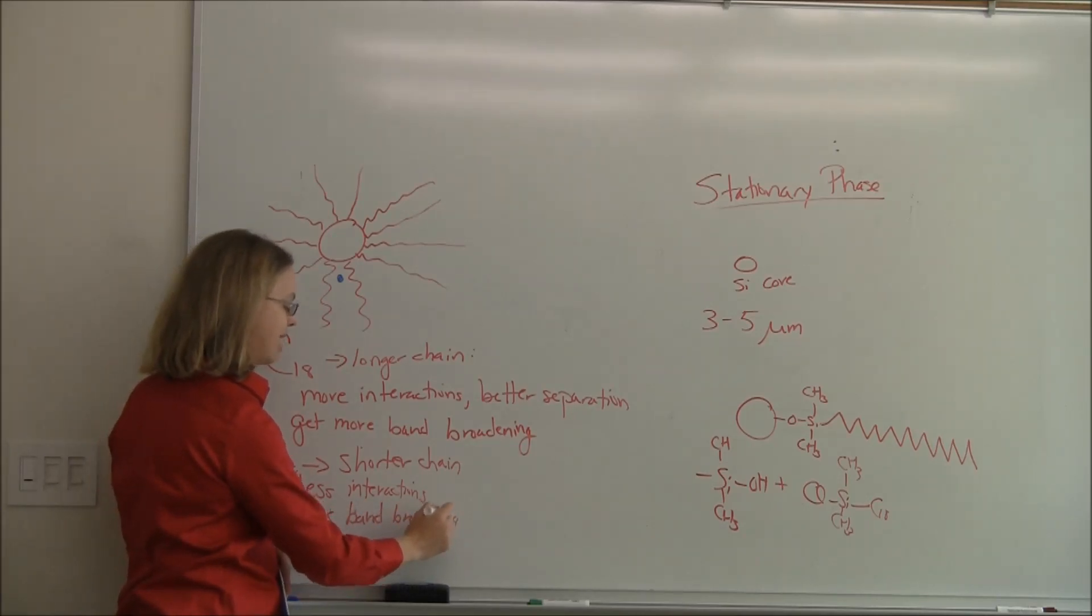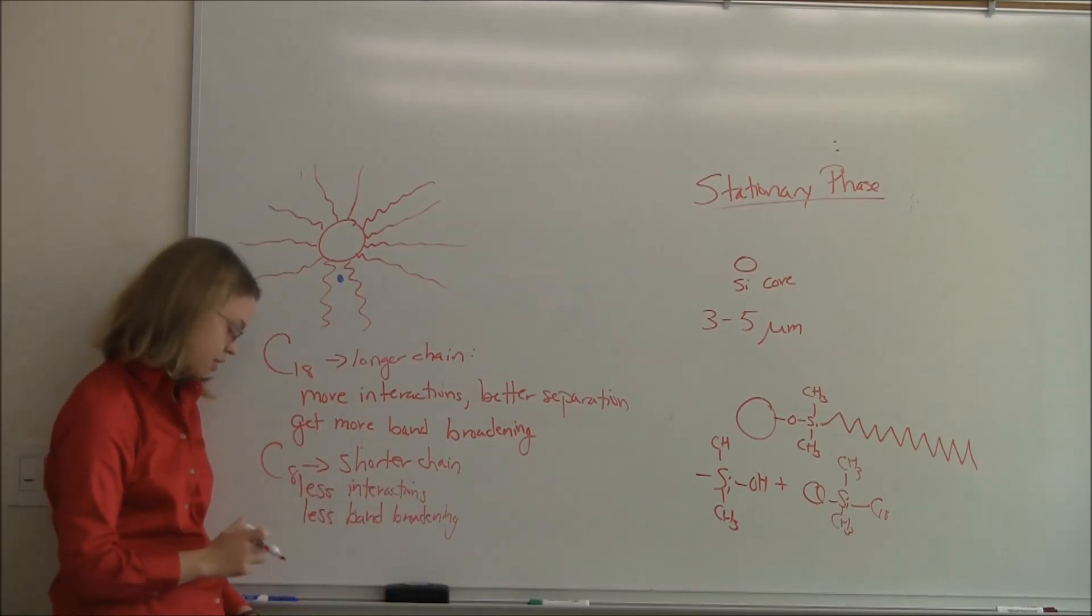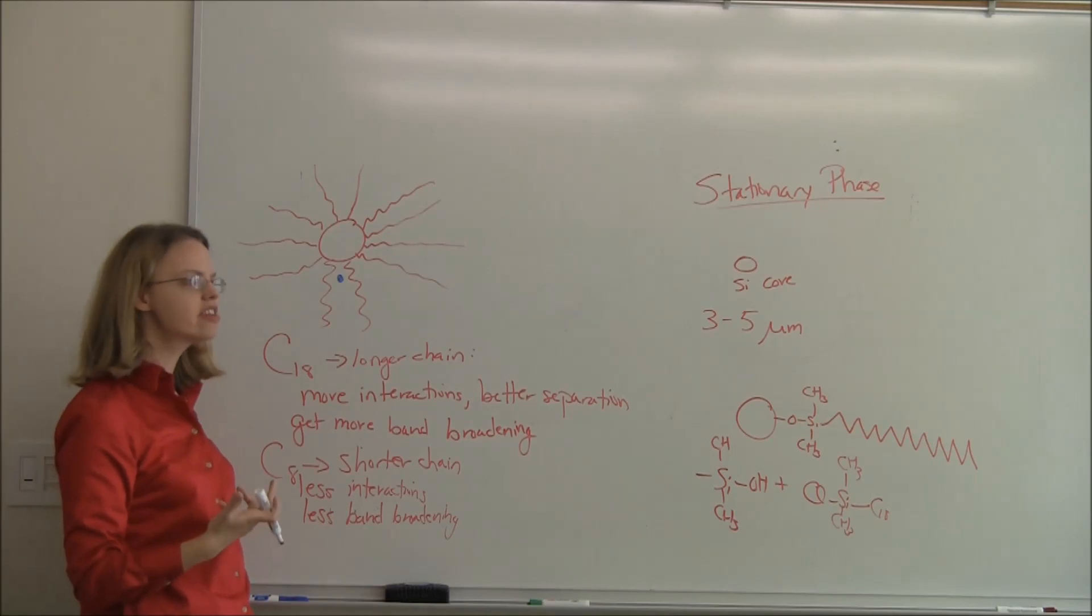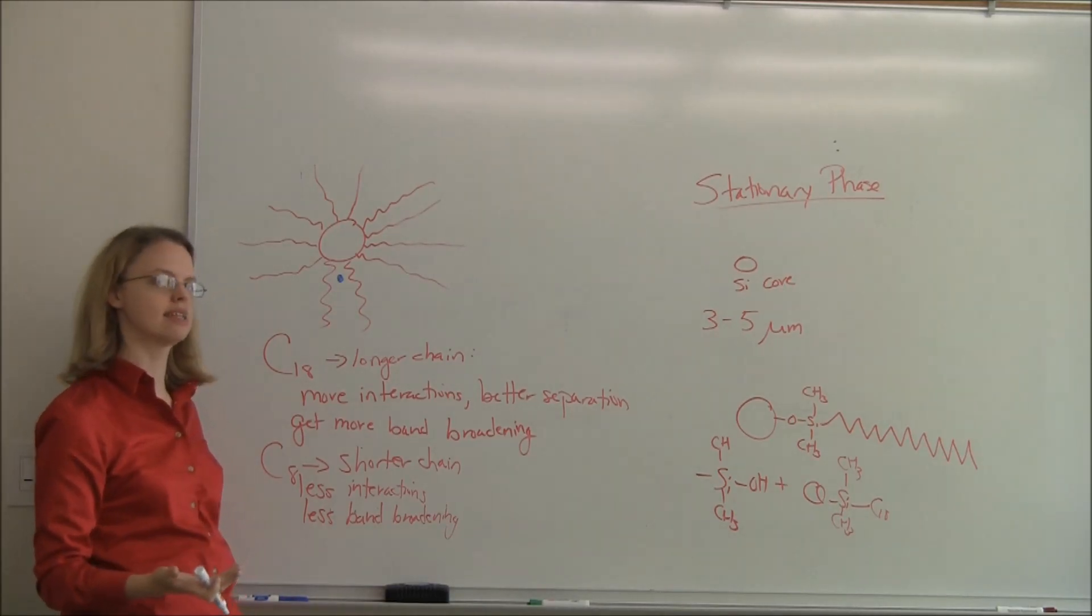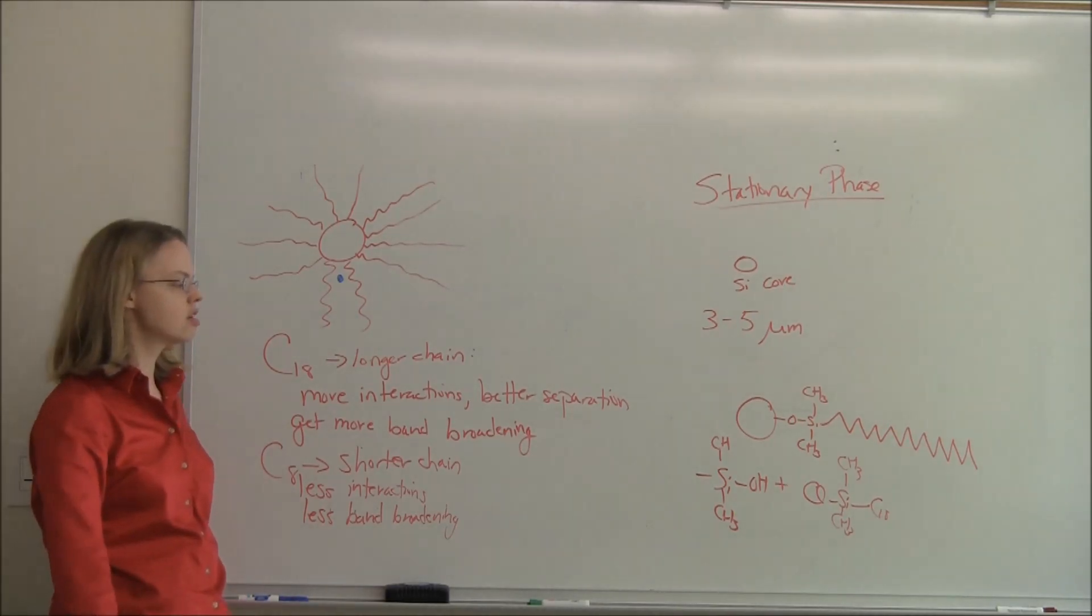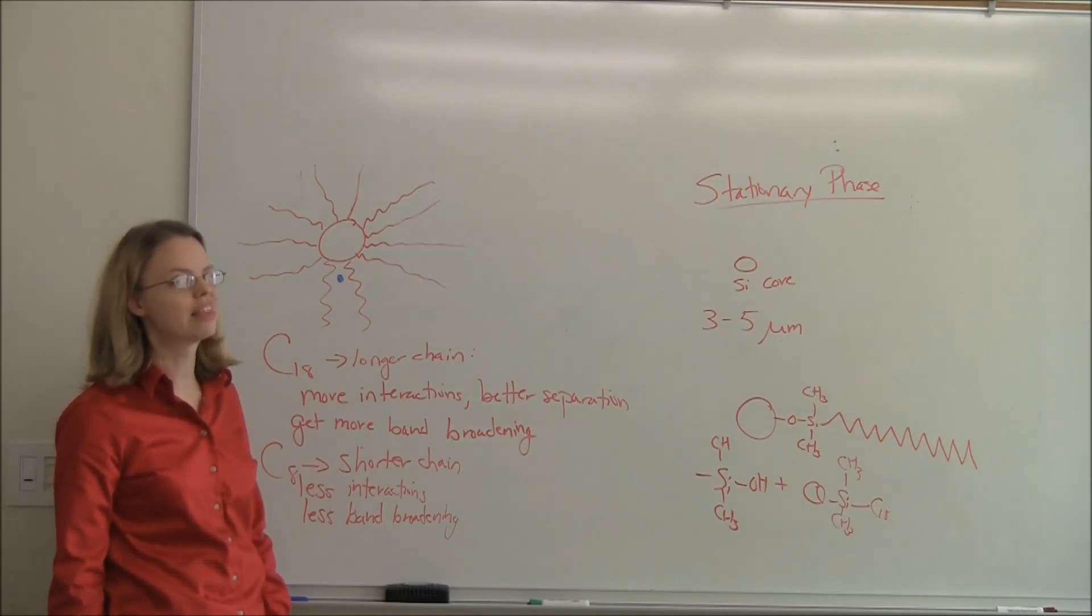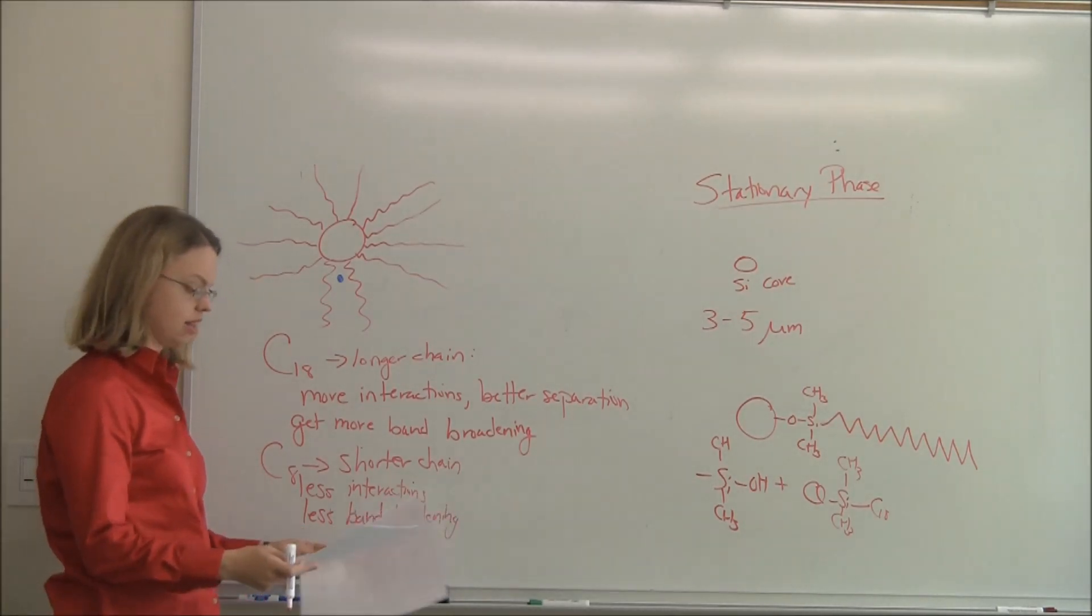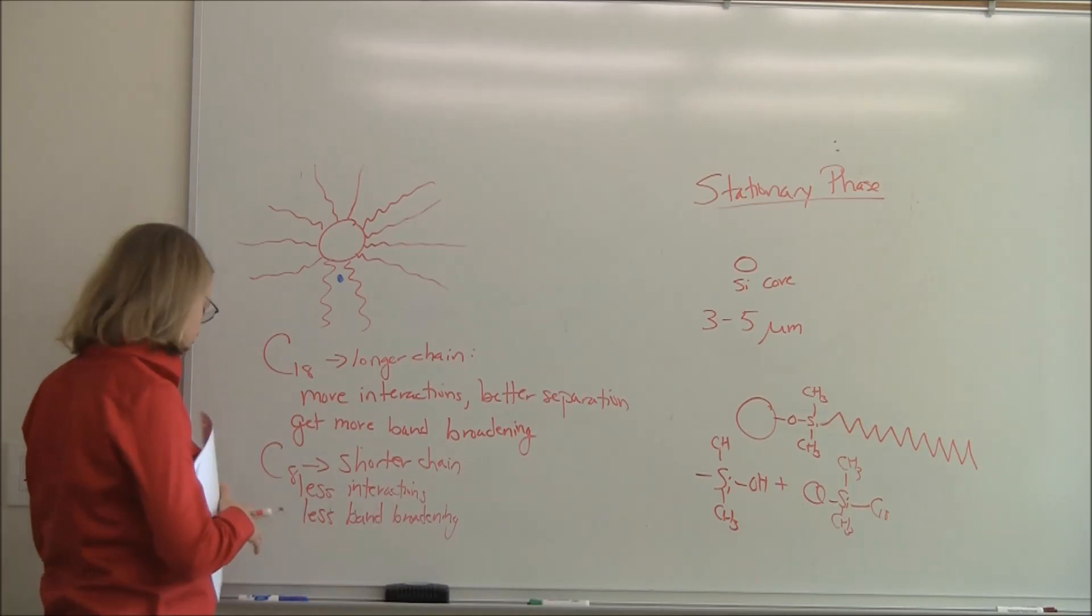Each column that we buy from the lab is actually a couple hundred dollars, so please don't ruin it. You can change columns, but it's not always the easiest thing to do. So you usually design your separation around the column that you have.